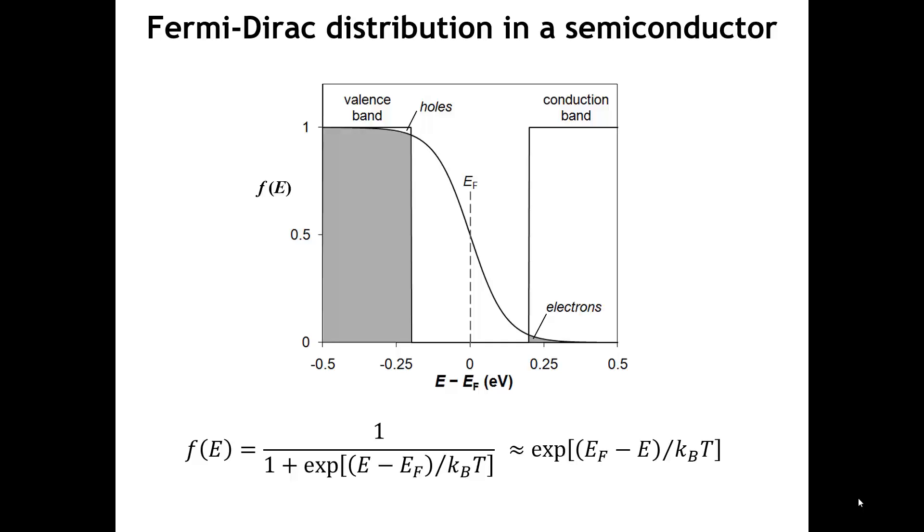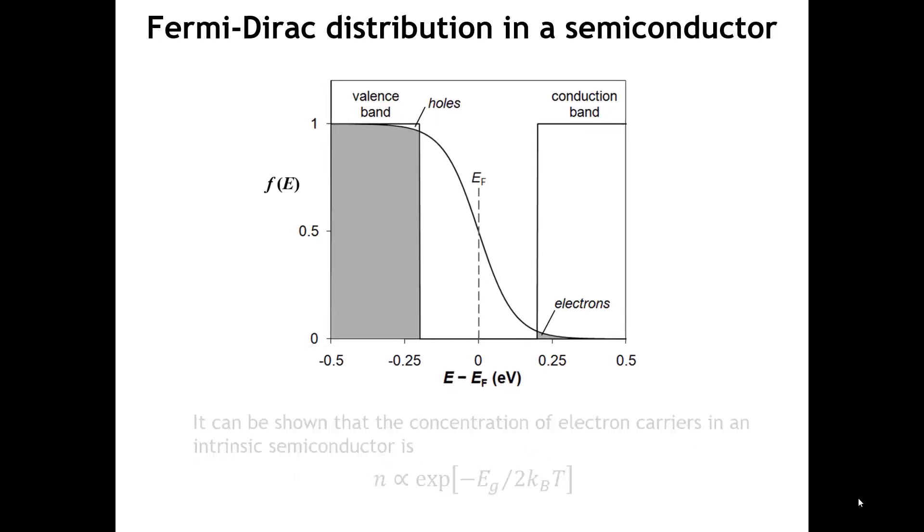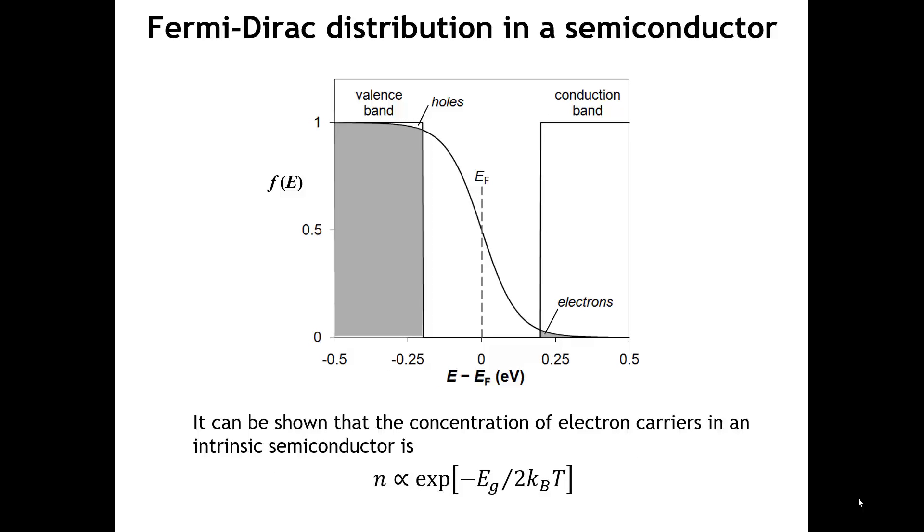This expression can be simplified. If we simplify it, we get this relationship for the Fermi Dirac function at any given energy. And then it can also be shown that the concentration of electron charge carriers in an intrinsic semiconductor depends exponentially on the band gap, as given in this relation here.